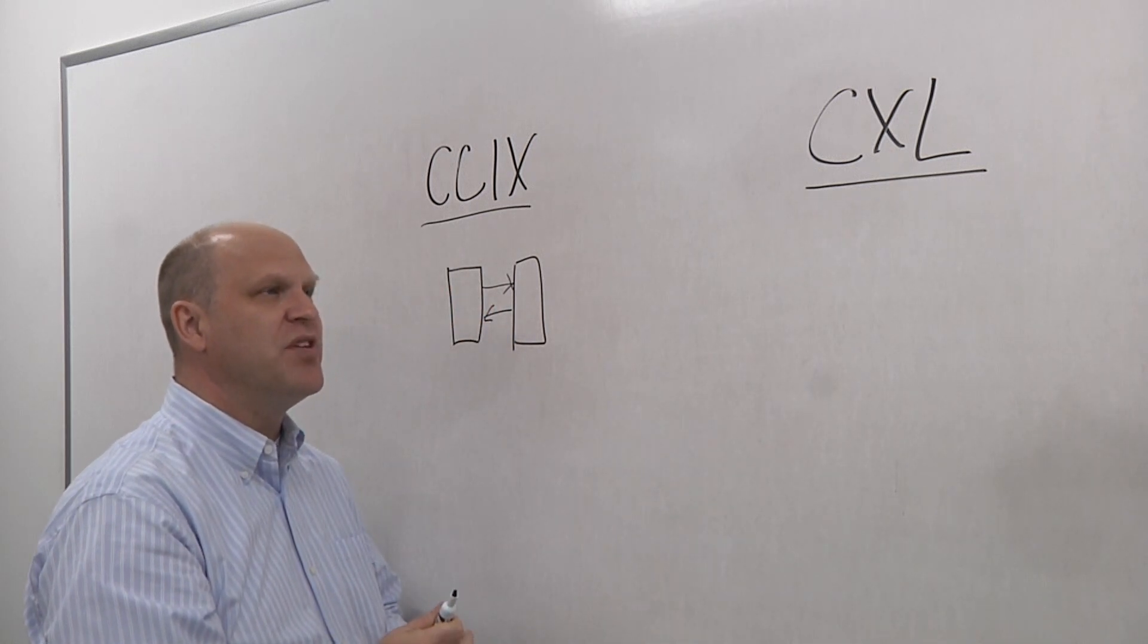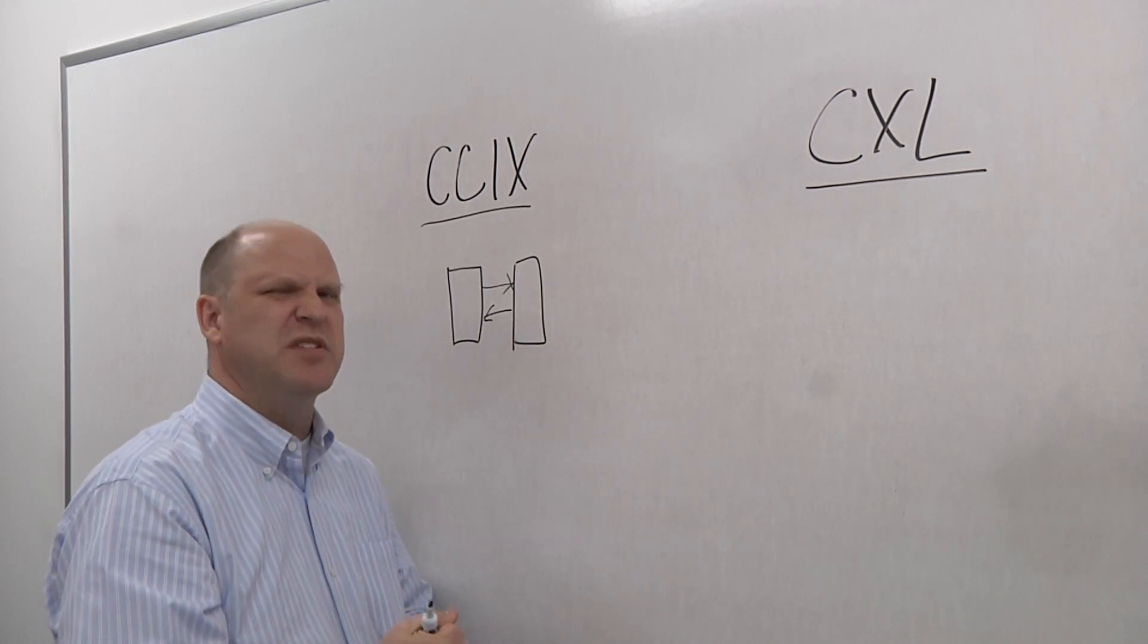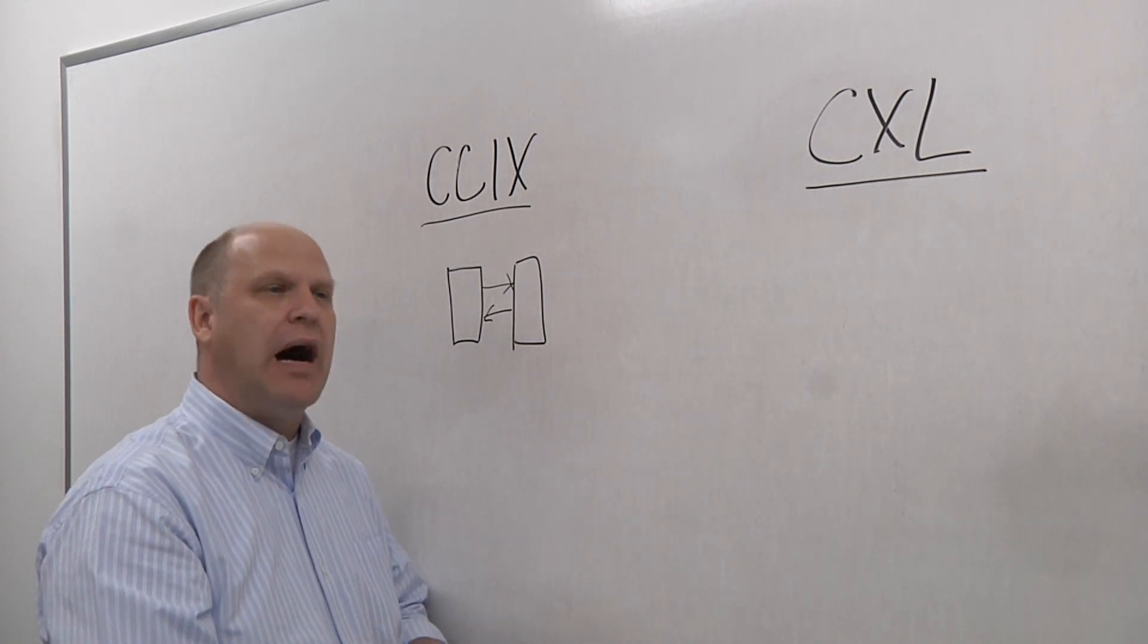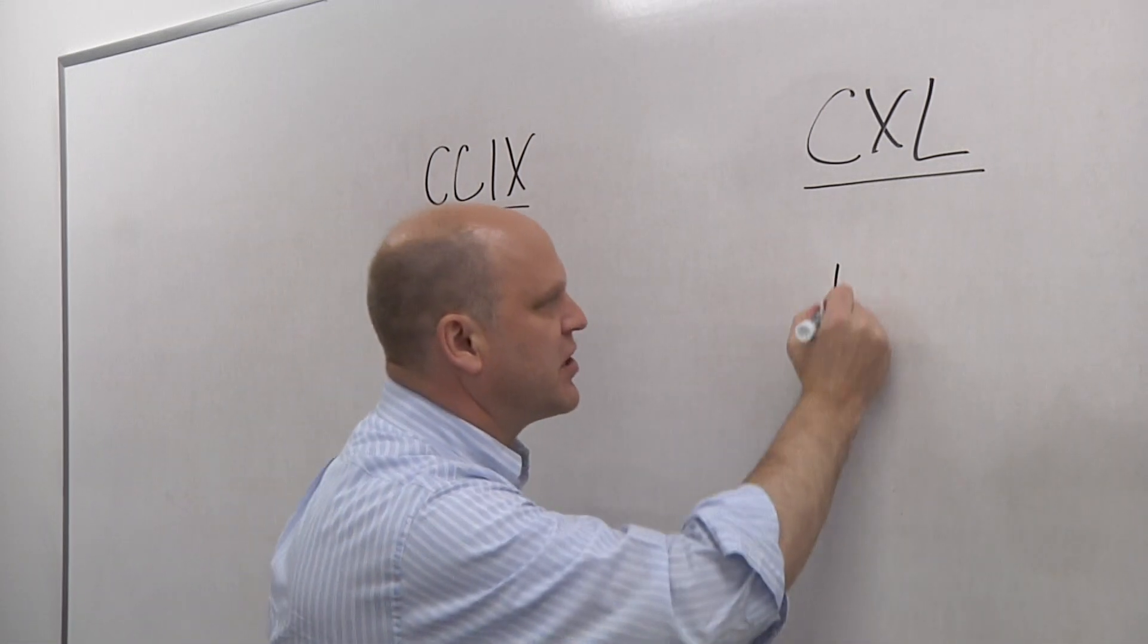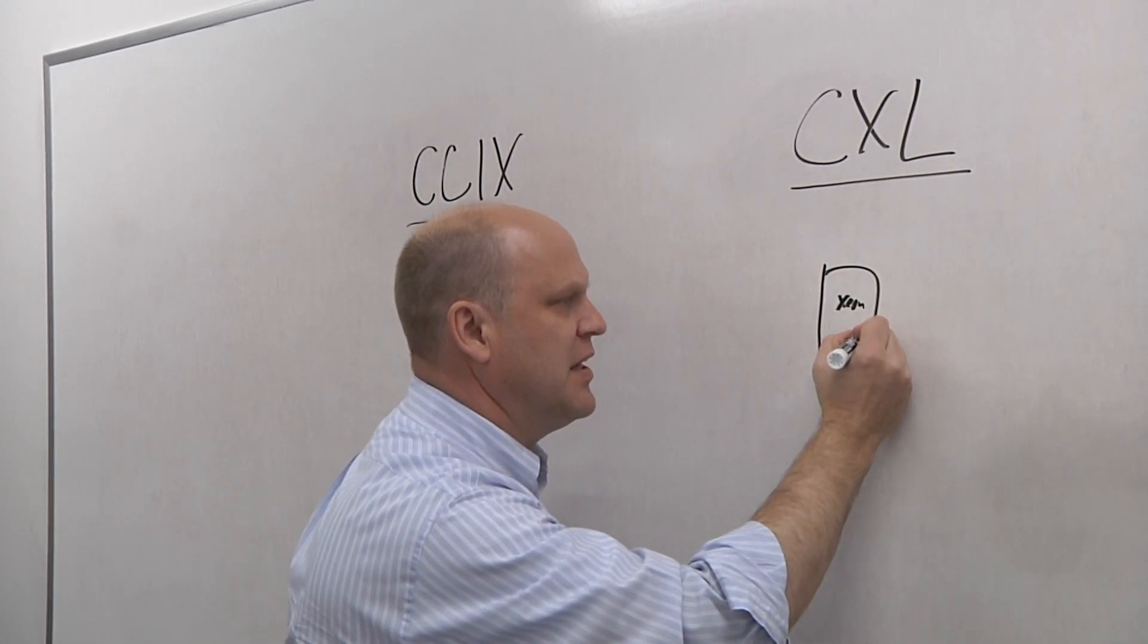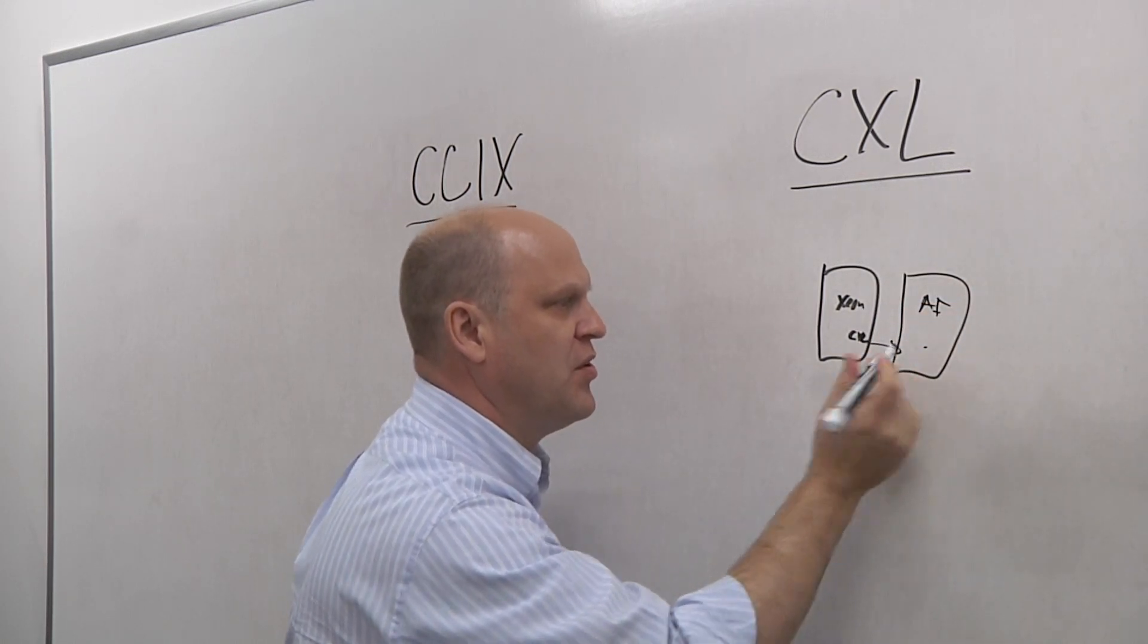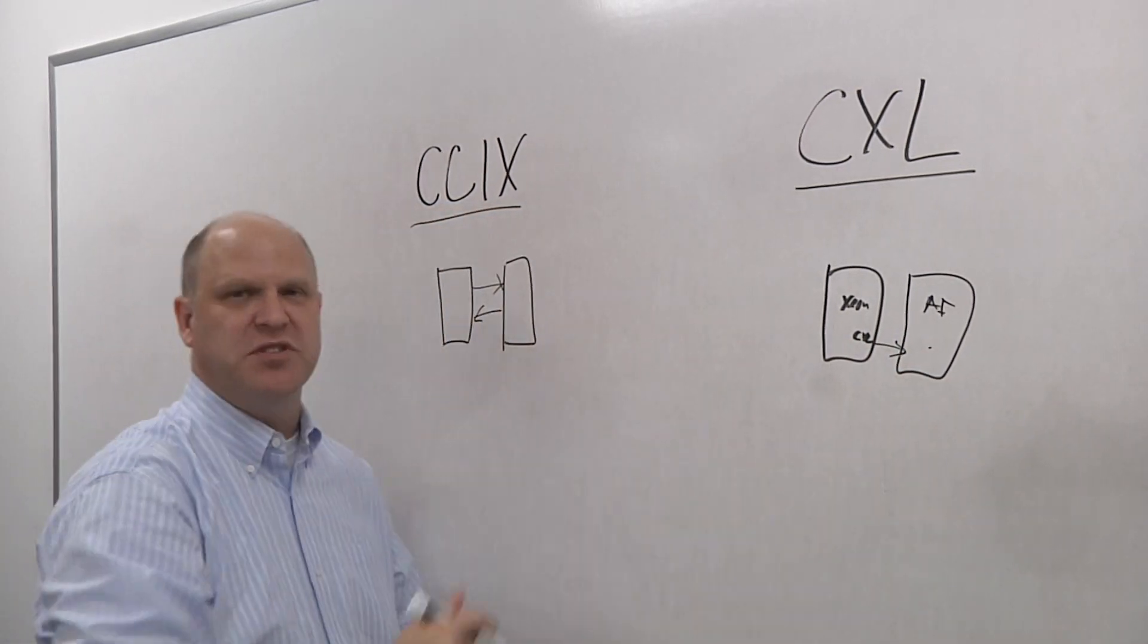When you look at the genesis of CXL, CXL was meant to solve maybe a little bit simpler problem. So given that you have something like an x86 master chip, how do you attach hardware accelerator chips to it? So in this particular case, you have your Xeon, which is your master, and then you have some kind of perhaps AI accelerator chip here. And this is always a master, this is a slave. So it's simpler from a digital logic standpoint.